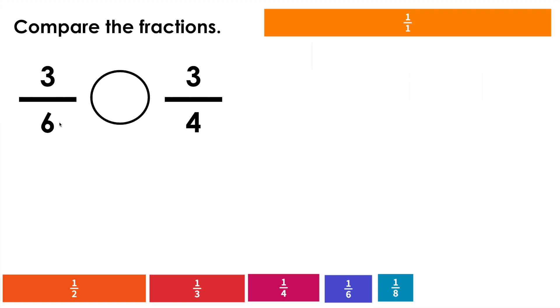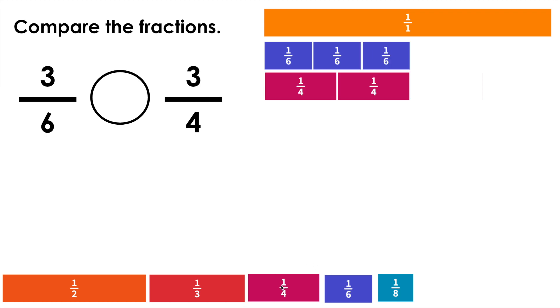Let's compare 3 sixths to 3 fourths. We need 1 sixth, 2 sixths, 3 sixths, and we need 3 fourths. 1 fourth, 2 fourths, 3 fourths.